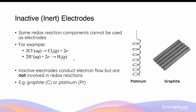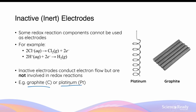Inert electrodes are materials that do not participate in redox reactions, yet provide a good material for electron conduction to occur. They conduct electron flow as they are electrically conductive, but they are chemically inert so they are not involved in redox reactions and will not interfere with the redox reactions you want taking place. Materials that make a good inert electrode include graphite, which is an allotropic carbon that is electrically conductive but chemically unreactive, and platinum, which is an inert metal that can also conduct electrons.